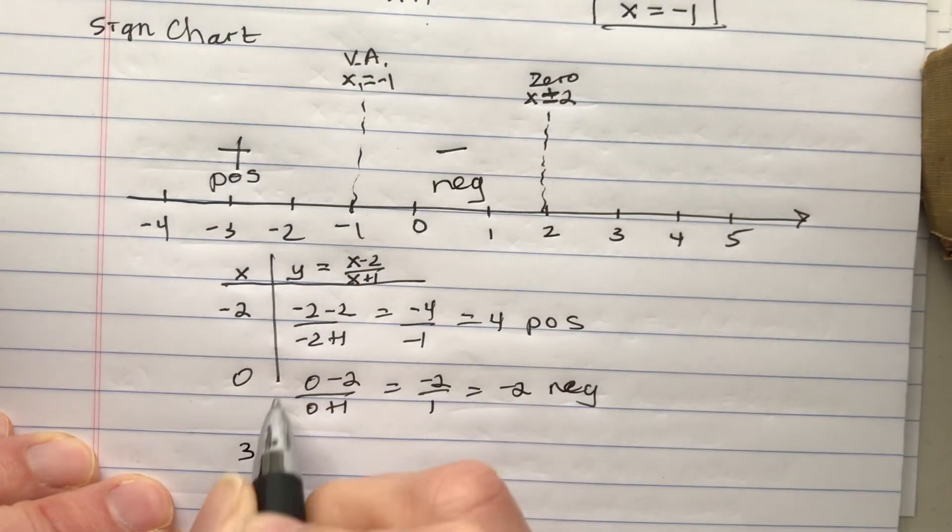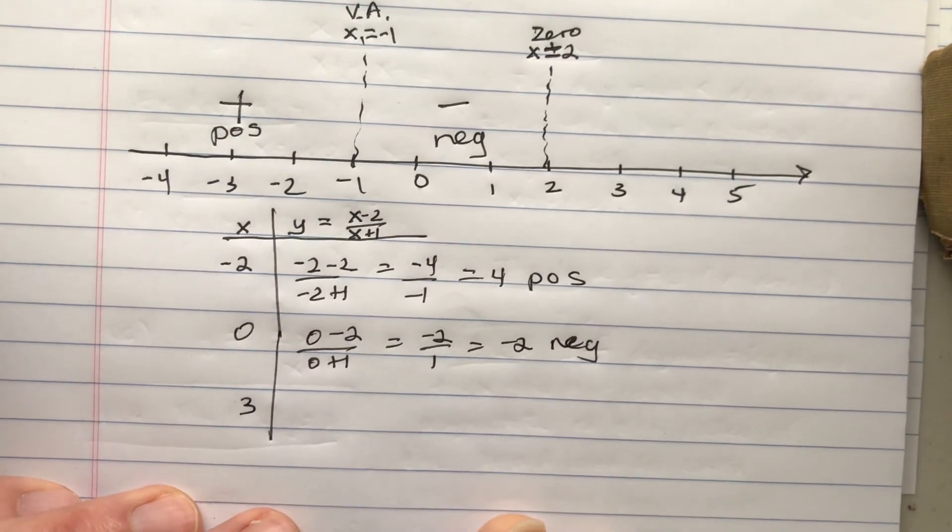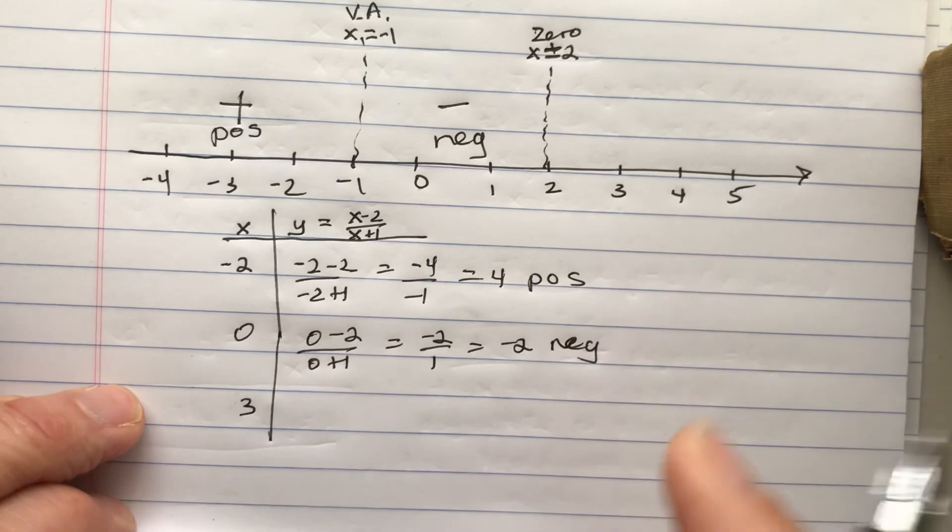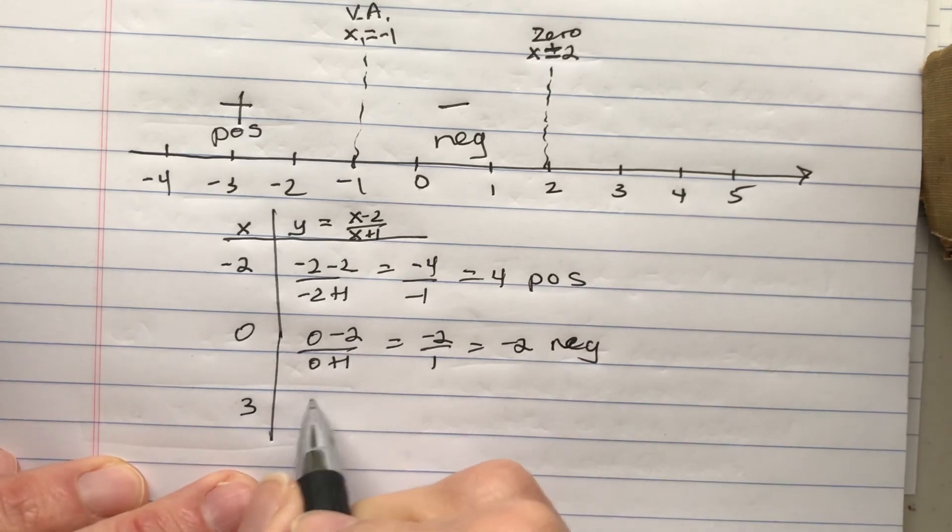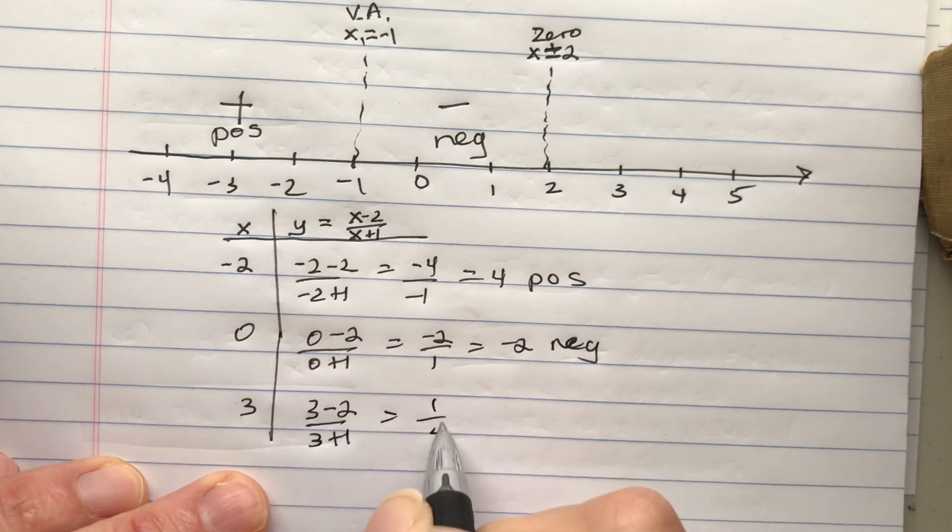And then in the next interval, I'll pick 3. Maybe it's good to pick like a really big number in the next interval, like a thousand, but I'm picking 3. And that's positive.